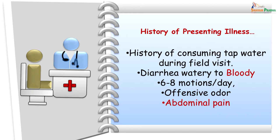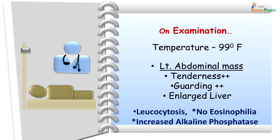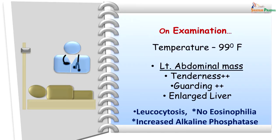On probing, Babu gave us history that whenever he visited the fields he used to consume tap water in that particular village. The diarrhea was initially watery and turned bloody later. Frequency of stools was 6 to 8 times per day, the amount was copious and offensive in odor, and he also had abdominal pain.